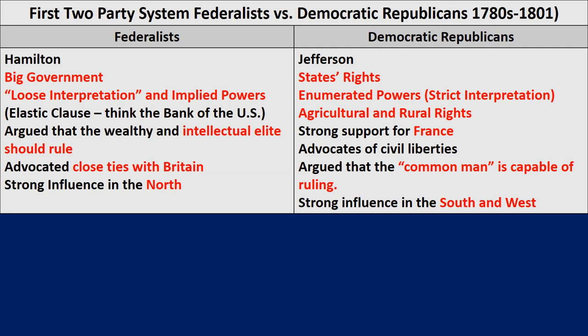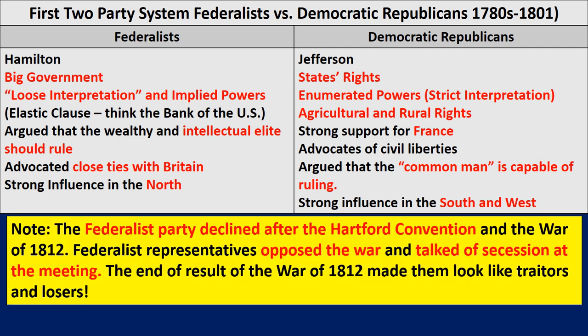What happened to the Federalist Party and why don't we see them anymore? They declined after the Hartford Convention and the War of 1812. Federalist representatives at the Hartford Convention not only opposed the war but talked of potentially seceding. In the days following the Battle of New Orleans, Americans came to believe they won the War of 1812 — so the Federalist Party looked like losers for opposing the war, and also like traitors for talking about secession.